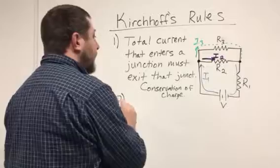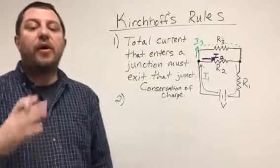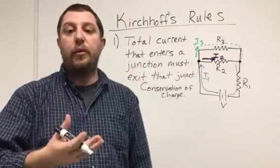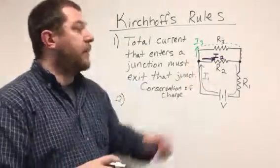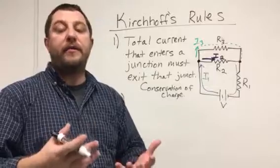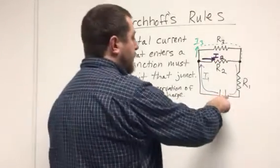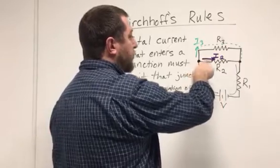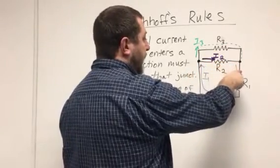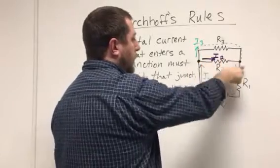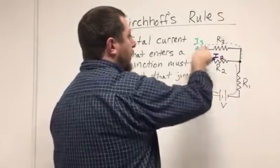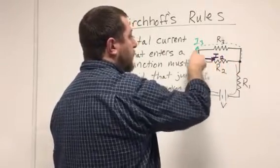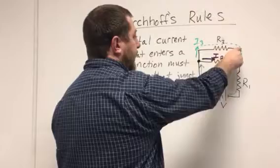Now Kirchhoff's second rule says that the total voltage across an entire closed loop - and in this particular circuit we have three different closed loops that we can consider. We can consider the loop where we look at the battery, then go through I2, and then back through I1, so I have a closed loop here. I have a closed loop around the entire perimeter of the circuit and I have a closed loop right here.